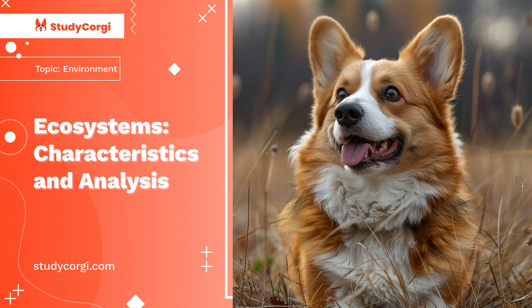Natural ecosystems are basically divided into two main types. They are the aquatic ecosystem and the terrestrial ecosystem.